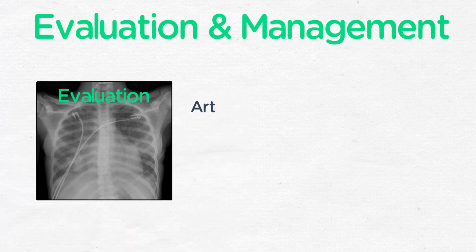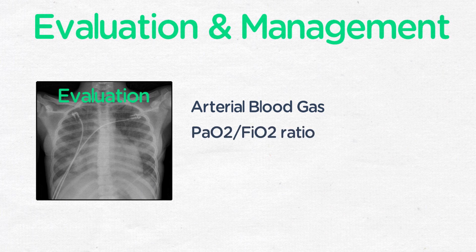The evaluation of ARDS involves the following. An arterial blood gas should be obtained to calculate the PaO2 to FiO2 ratio, which is the ratio of the partial pressure of oxygen in the arterial blood relative to the fraction of inspired oxygen being delivered to the patient. As the PaO2 decreases relative to the FiO2, the ratio will decrease, and a ratio of less than 300 indicates ARDS, with less than 100 meaning severe ARDS. A chest x-ray will demonstrate the bilateral coalescent opacities as described previously. Additionally, any evaluation for an underlying cause should be undertaken.